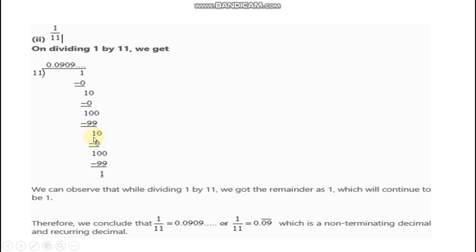So again our remainder is 1, and it will keep repeating. This means our answer will become a non-terminating decimal. Since our remainder repeats, we say it is a non-terminating recurring decimal. Therefore, 1 upon 11 is equal to 0.09 bar. This bar means repetition, indicating it is a non-terminating and re-occurring decimal.